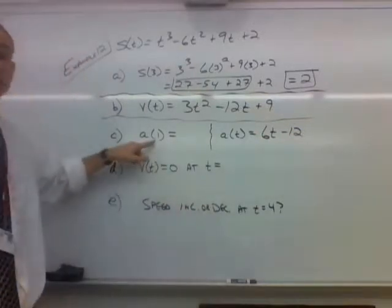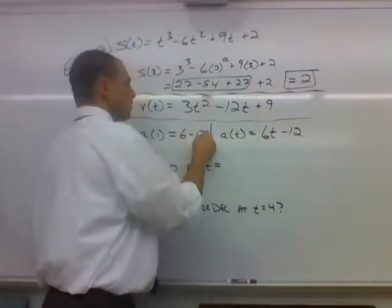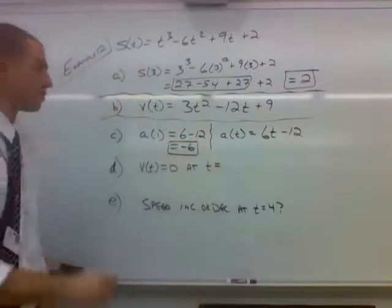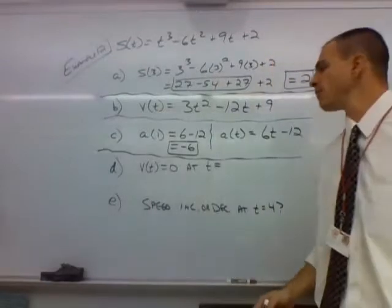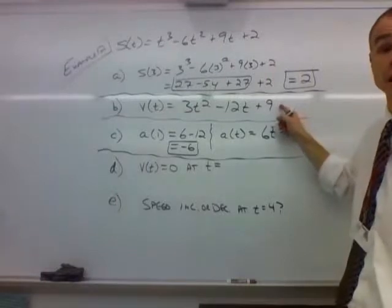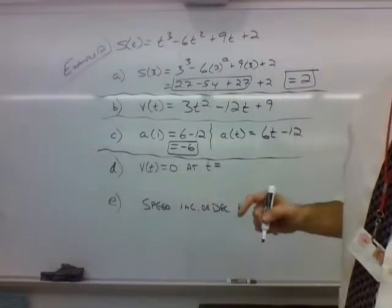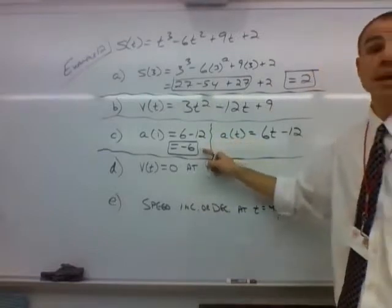We're interested when t is equal to 1. So we're going to plug 1 in for t. So that's 6 minus 12, or negative 6. So our acceleration is negative 6. And technically, if we think about units, velocity is meters per second, because position was meters, and so velocity is meters per second. And then acceleration, this is going to be meters per second squared.